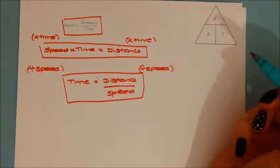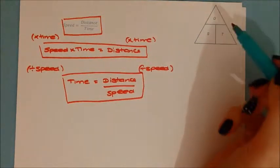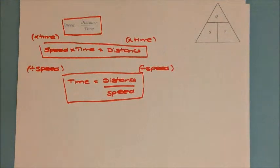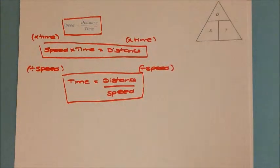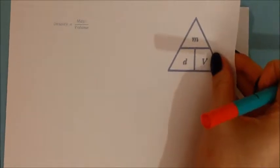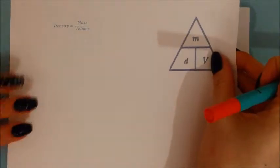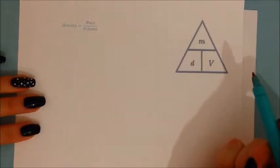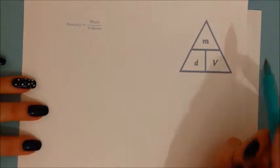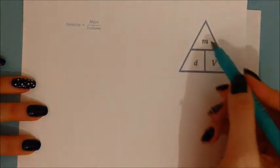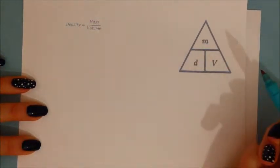You can use the triangles, but you need to explain this only works because of the special relationship between these three variables. The other common formula you might come across is density. Density works in exactly the same way. Density equals mass divided by volume.